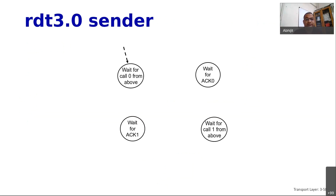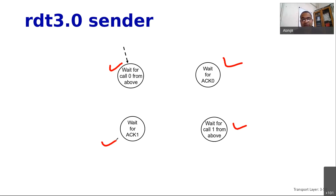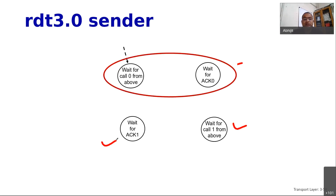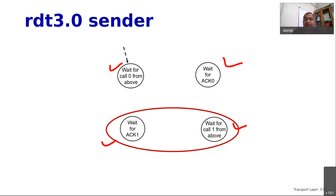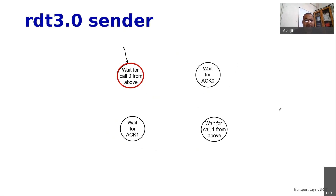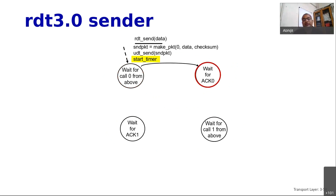In RDT 3.0 we have four states: two states indicating waiting for the application to call the transport layer, and two states — wait for ACK 0 and wait for ACK 1 — indicating the sender is waiting for acknowledgement for packet 0 or packet 1. If initially the sender is in the 'wait for call 0 from above' state, when it receives a request from the application it creates the packet with checksum and sequence number 0, calls the underlying unreliable protocol UDT_send, starts the timer, and moves to wait for ACK 0.